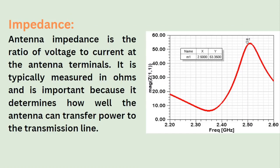Next comes the impedance. Antenna impedance is the ratio of voltage to current at antenna terminals. It is typically measured in ohms and is important because it determines how well the antenna can transfer power to the transmission line. If there is a good impedance match, the antenna will radiate better. If there is a mismatch, the reflections will be more and hence the efficiency will be decreased.